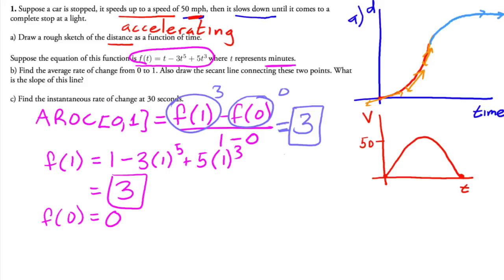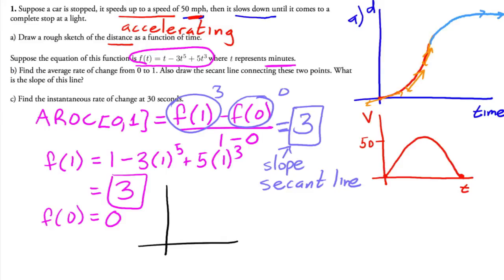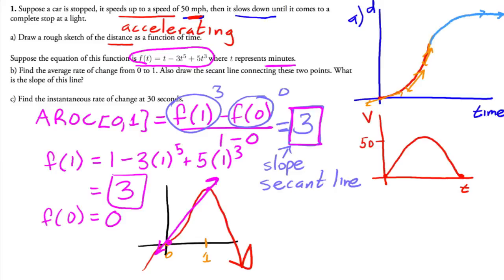So 3 is the average rate of change — it's the slope of the secant line between 0 and 1. If I draw a rough sketch, the curve comes up, with 0 and 1 marked, and the slope of the secant line connecting those two points equals 3. Now we want to find the instantaneous rate of change at 30 seconds. 30 seconds equals 0.5 minutes, so T = 0.5.